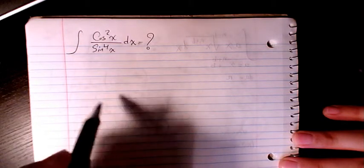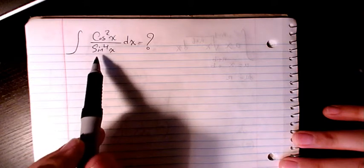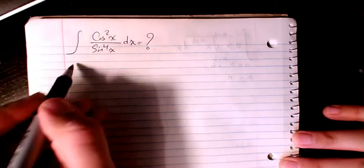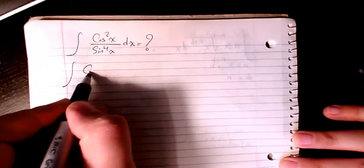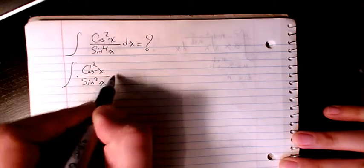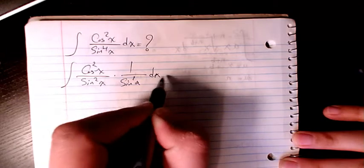What's up guys, this is Massy. Welcome to my channel. In this video I want to show you integration of cosine squared x divided by sine to the power of 4x dx. What I can do is I can have cosine squared x divided by sine squared x and separate it, and here I have sine squared x dx.